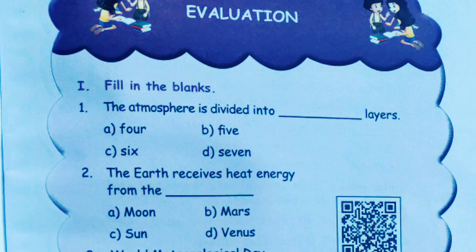First one: fill in the blanks. First question — the atmosphere is divided into dash layers. Options are 4, 5, 6, 7. The atmosphere is divided into 5 layers. Answer is 5, option B. Next question — the earth receives heat energy from the dash. Options: moon, mars, sun, venus. The earth receives heat energy from the sun.